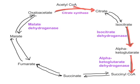Now let's move on to regulation proper. One of the most highly regulated enzymes in TCA cycle is isocitrate dehydrogenase. If you want to control the pace or speed of TCA cycle, you really need to hold on to this enzyme — isocitrate dehydrogenase. What are the factors that control isocitrate dehydrogenase?